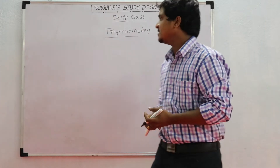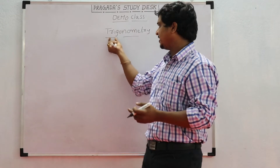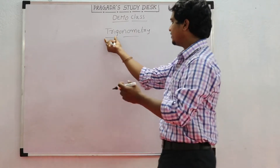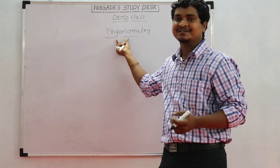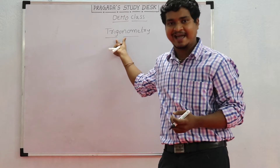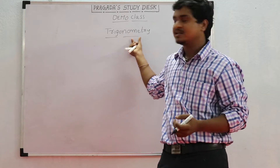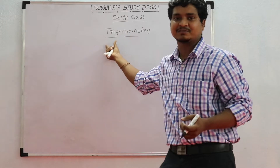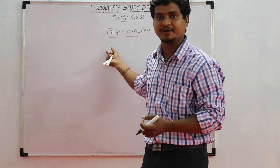Trigonometry is nothing but 3. 'Tri' means 3, 'gon' means sides or angles, and 'metry' means measurements. So, the measurement of 3 sides or 3 angles is nothing but trigonometry.